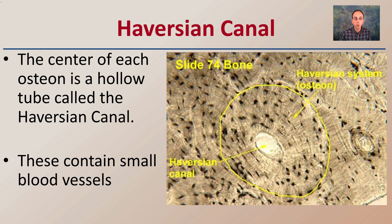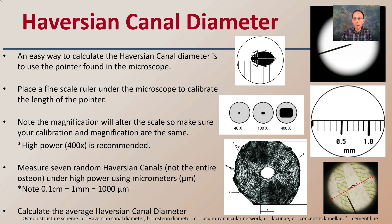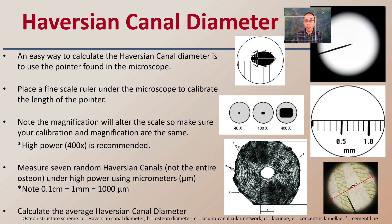The center of each osteon is a hollow tube called the Haversian canal, which contains small blood vessels. The easiest way to calculate the diameter of that canal is to use the pointer found in the microscope — some pointers will even have a measurement. You can also place a fine-scale ruler under the microscope to calibrate the pointer length. Note that magnification will alter the scale, so make sure your calibration and magnification match. Use 400x high power and measure seven random canals — not the entire osteon — using micrometers. Note that 0.1 cm equals 1 mm, which equals 1,000 micrometers. Then calculate the average Haversian canal diameter.